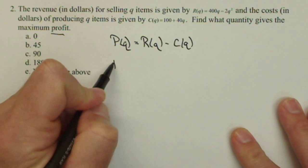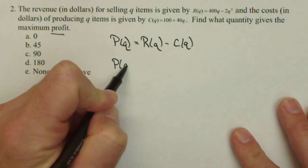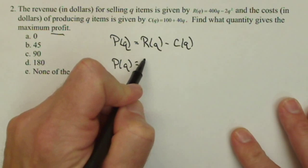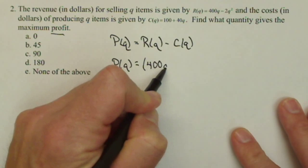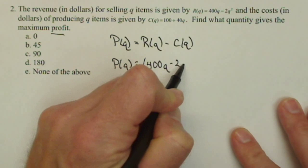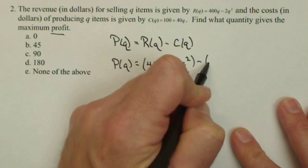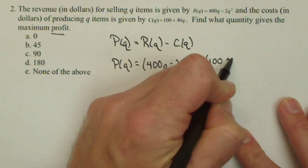Since we're going to be finding the derivative to get the critical value, we don't necessarily need to combine the functions, that's up to you. So 400q - 2q² - (100 + 40q).